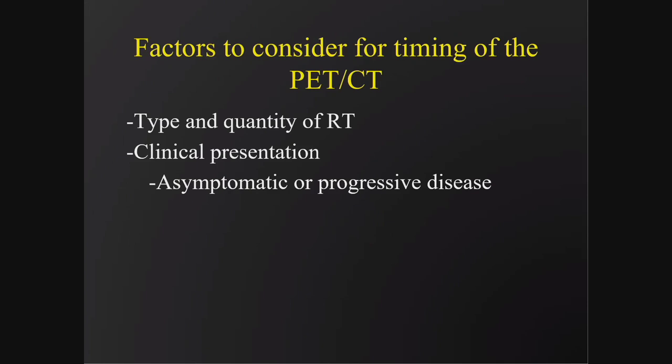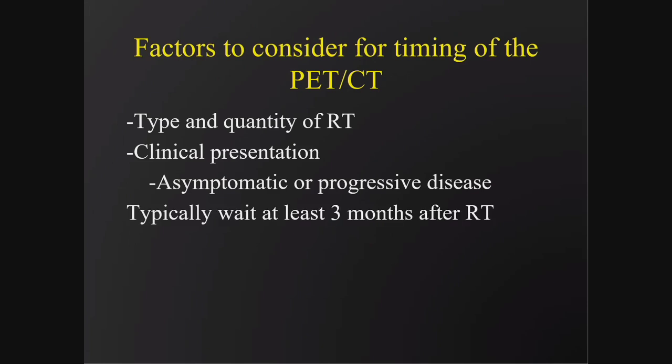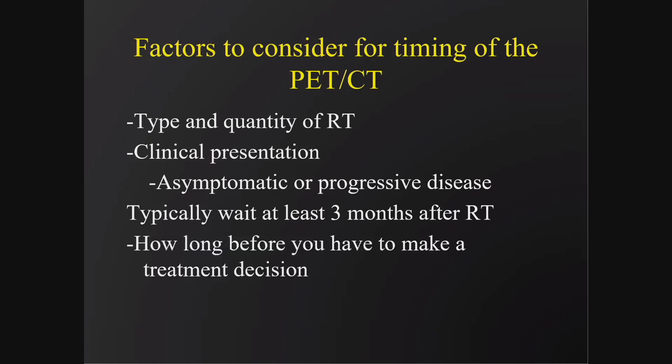The most important factor is the clinical presentation — whether the patient is doing well and asymptomatic, or whether there is clinical suspicion of progression. If the patient is progressing, you get imaging much earlier. If the patient is doing well, similar to head and neck cancer, you typically want to wait at least three months after radiation therapy. If asked how long to wait, I'd say somewhere around three to six months, but the real best answer is: how long before you need to make a treatment decision?